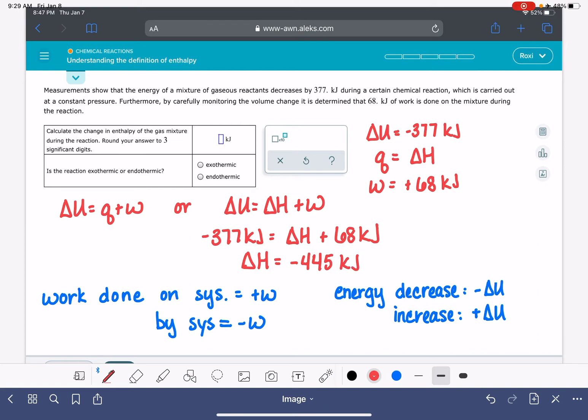And that's the answer that we want to put up in this box, negative 445 kilojoules. Make sure you're paying attention to however many sig figs it wants.